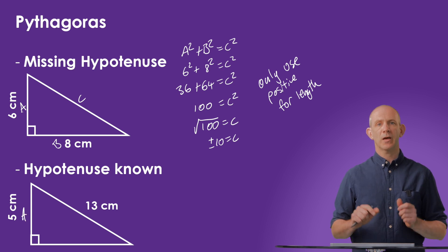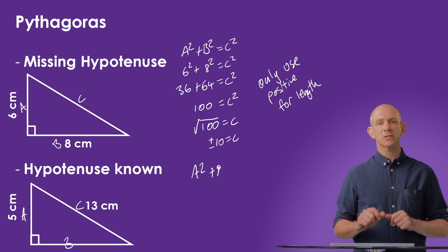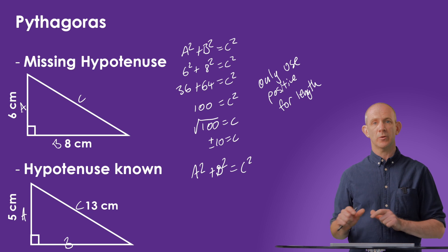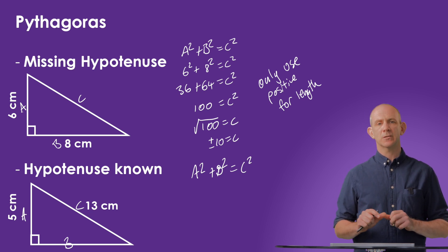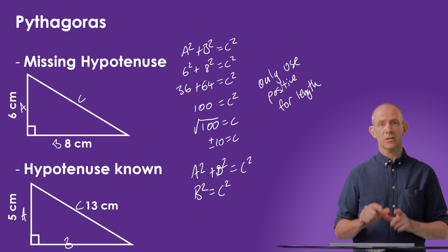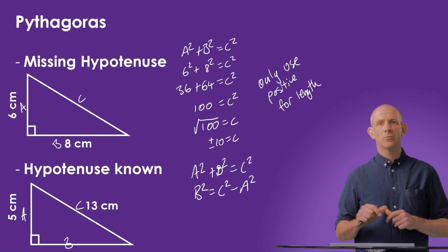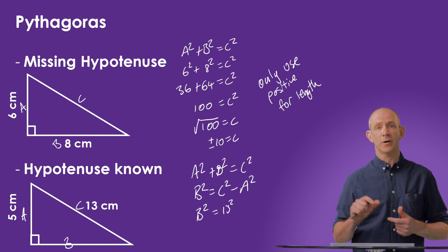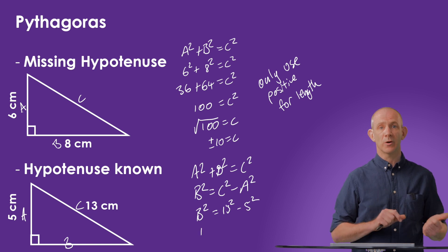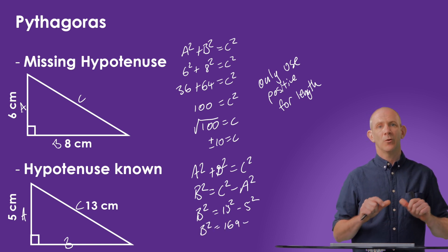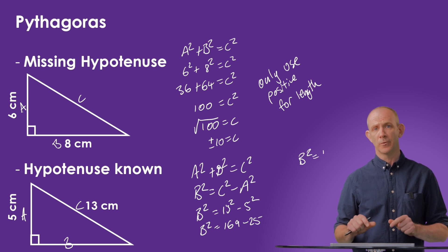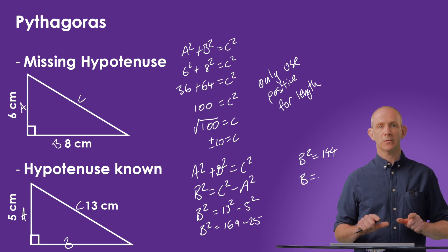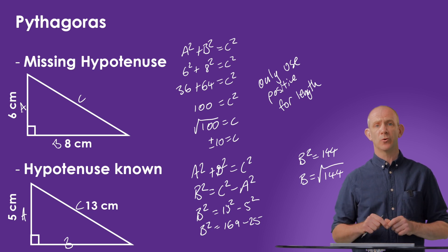In the next problem, we have the hypotenuse but are trying to calculate the value of side B. As always, we can state that A squared plus B squared equals C squared. But here we want to rearrange this by subtracting A squared from both sides, which makes B squared equals C squared minus A squared. We can now substitute in the values for our A and C variables to get B squared equals 13 squared minus 5 squared, which means B squared equals 169 minus 25, therefore B squared equals 144. We can now square root both sides to get B equals the square root of 144, which gives us 12.